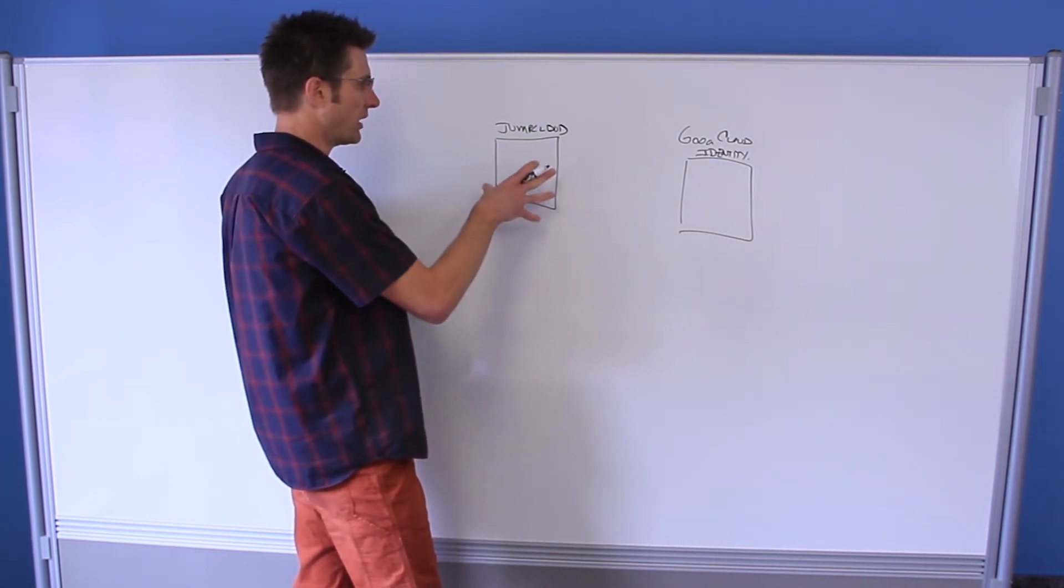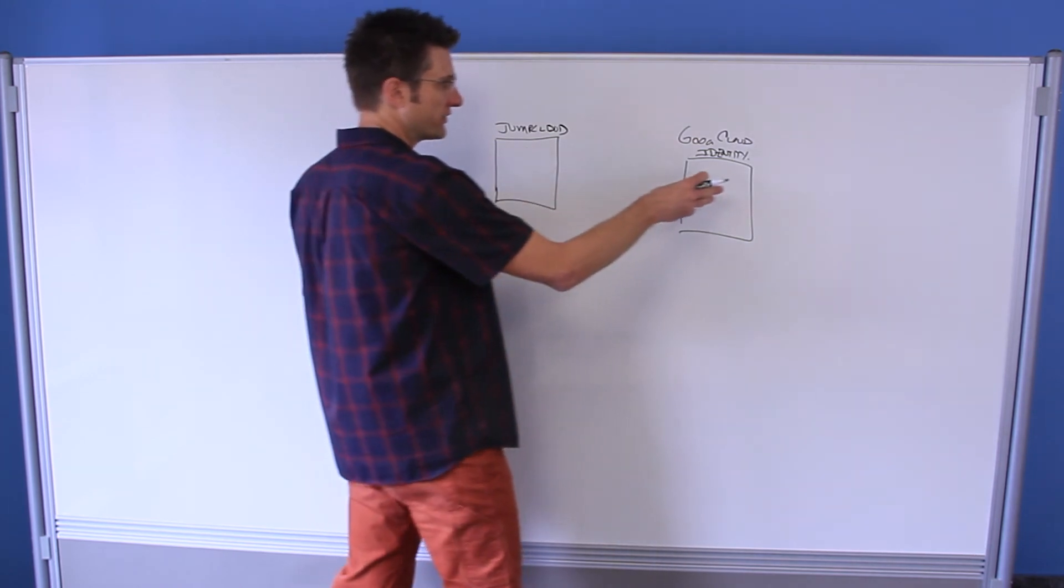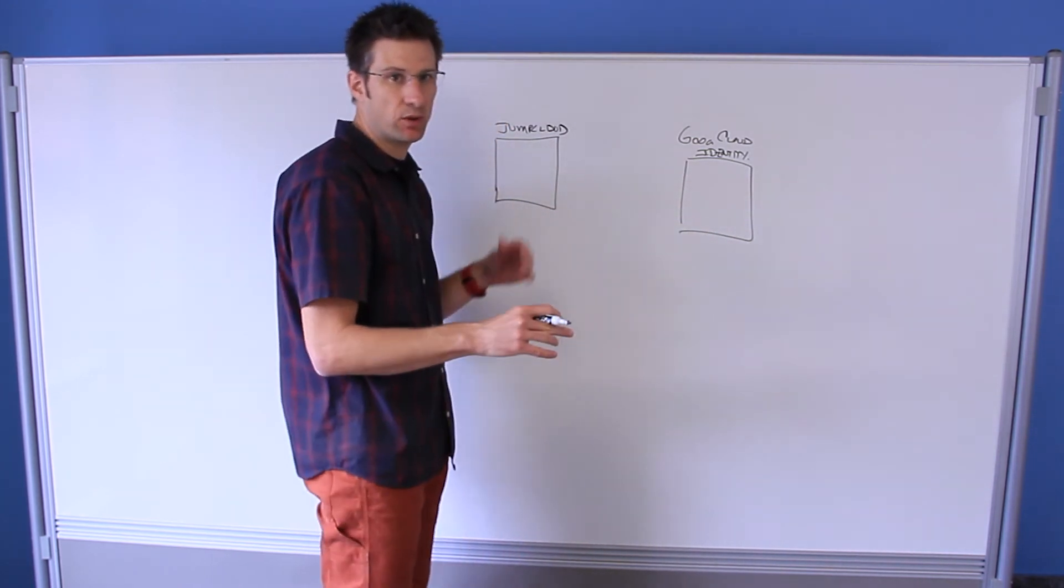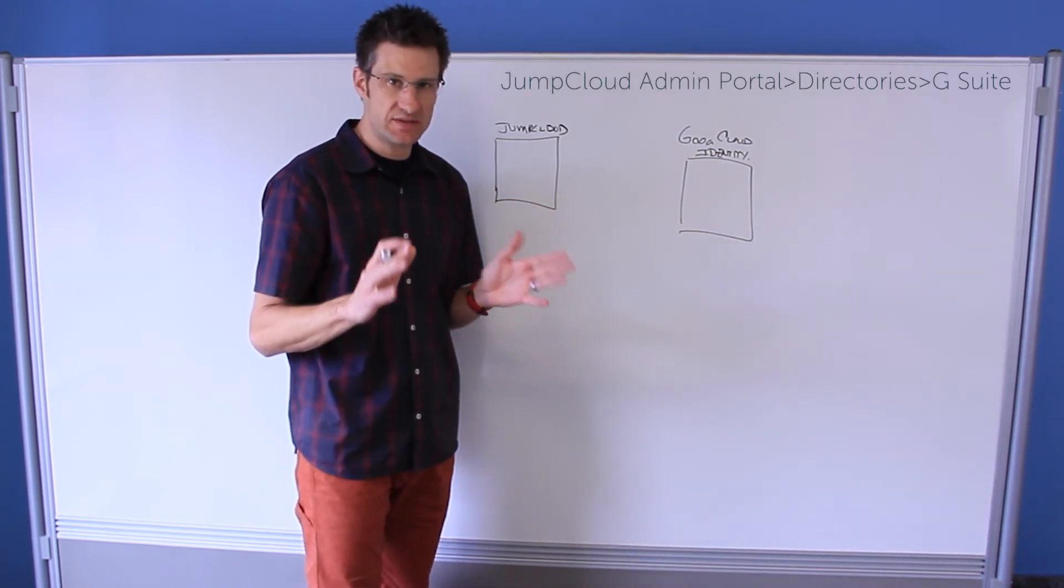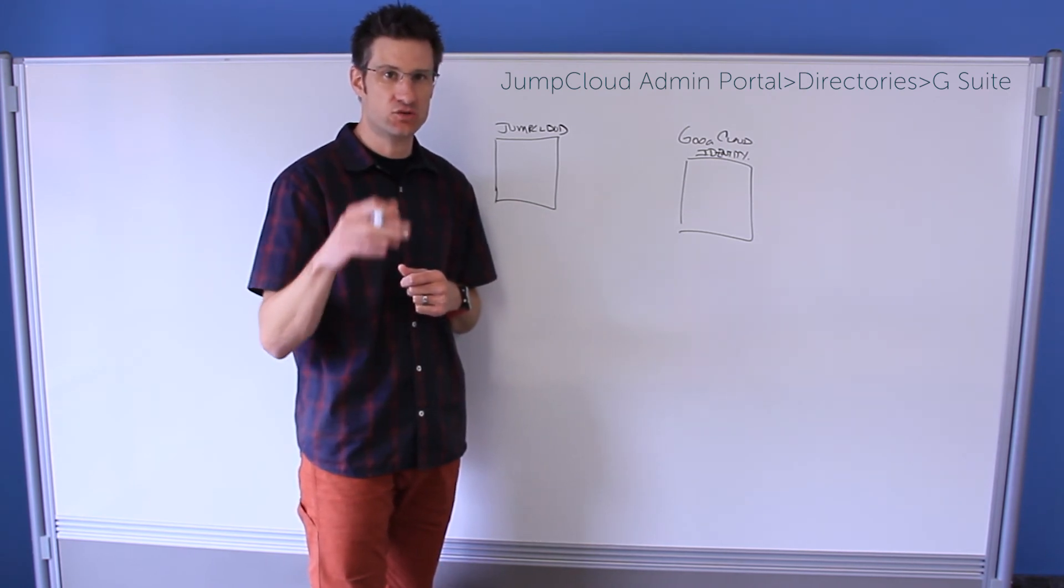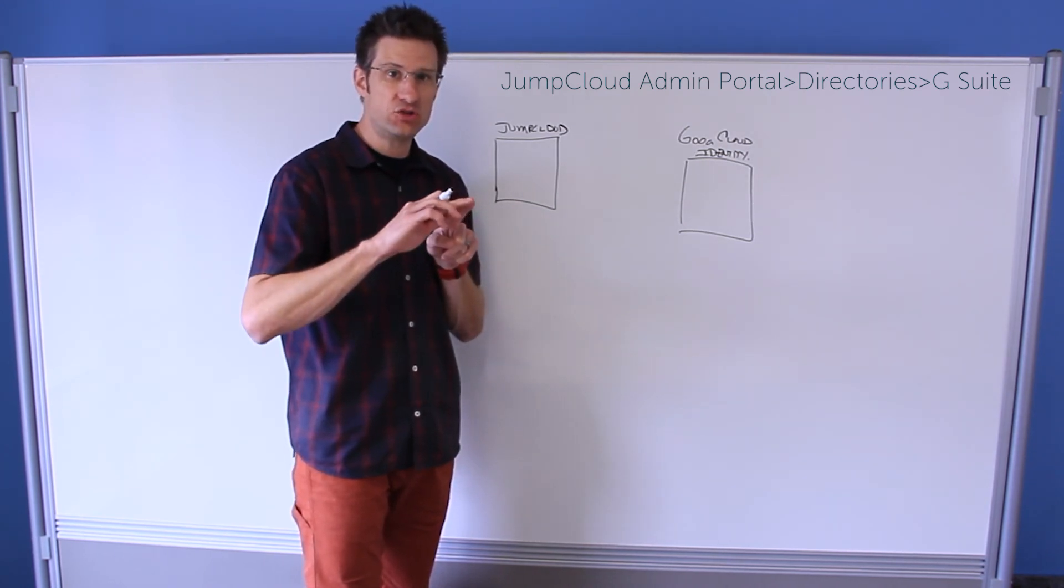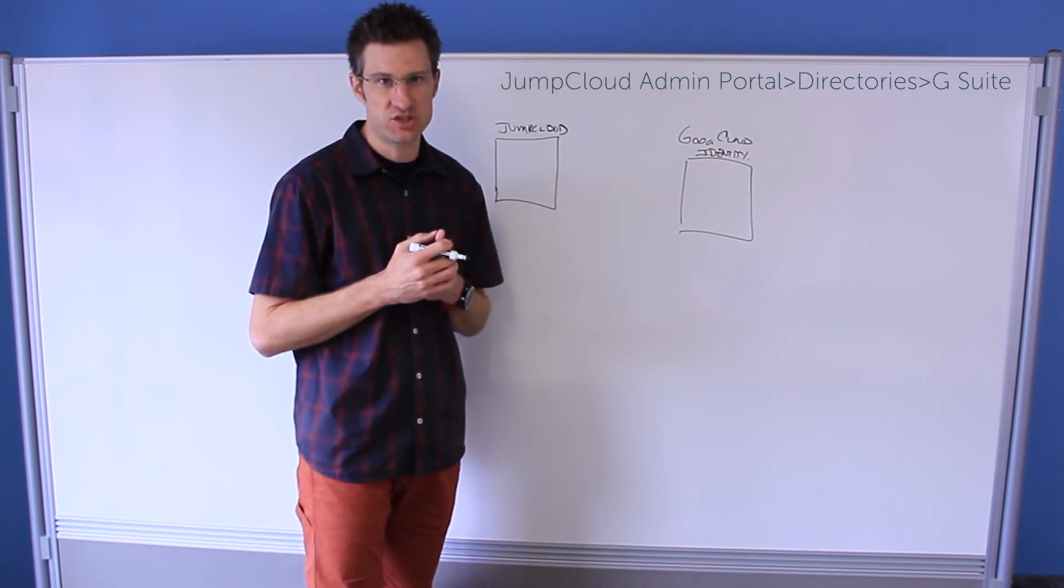From the beginning, when you are integrating JumpCloud with Google Cloud Identity, it's very simple. Inside of the administrative portal, there is a directories tab and you will use a super admin set of credentials via OAuth to maintain a persisted direct connection with G Suite.